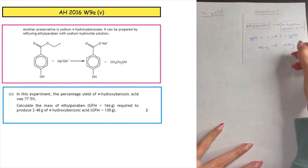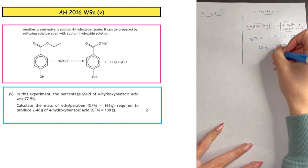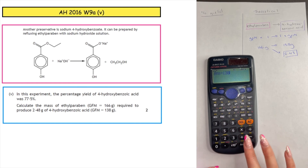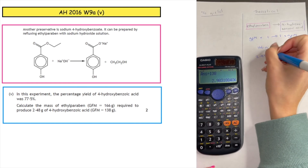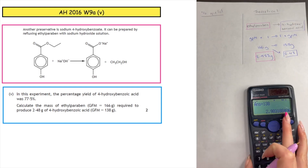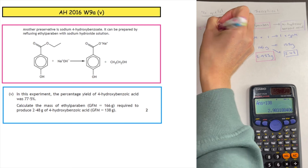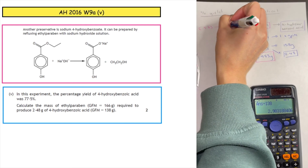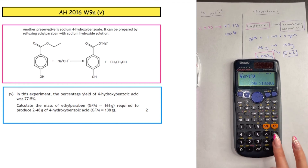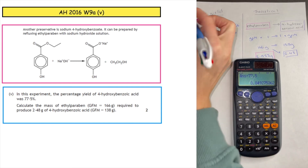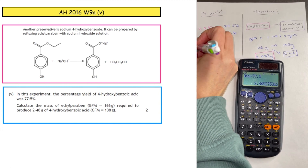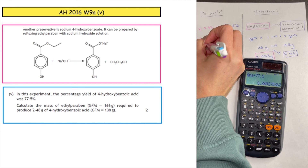The question states we want to produce 2.48 grams of product, so we cross multiply: 166 times 2.48 divided by 138, giving a theoretical mass of 2.983 grams. We then take that theoretical value of 2.983 and make it equal to the percentage yield of 77.5%. Scaling for 100%: 2.983 times 100 divided by 77.5 gives us the actual mass to put into the reaction as 3.85 grams.